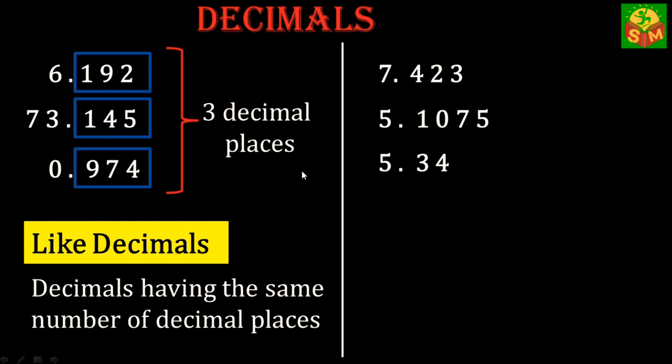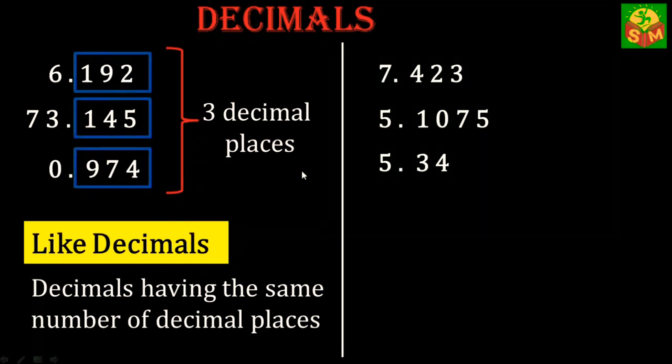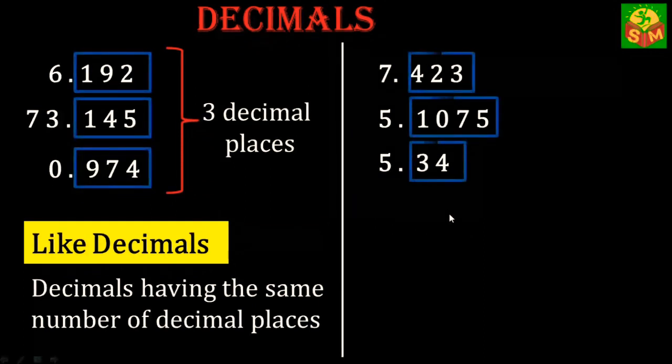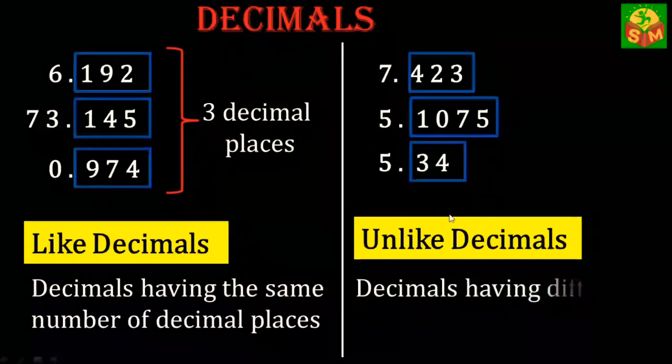On the right hand side, let's look at another set of decimals: 7.423, 5.1075, 5.34. Here the number of digits after the decimal point are not the same. Such decimals are called unlike decimals. Decimals having different number of decimal places are called unlike decimals.